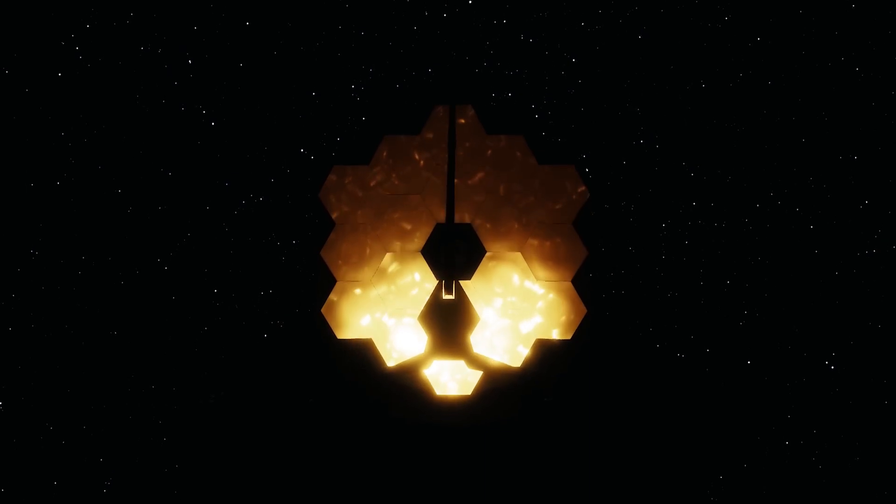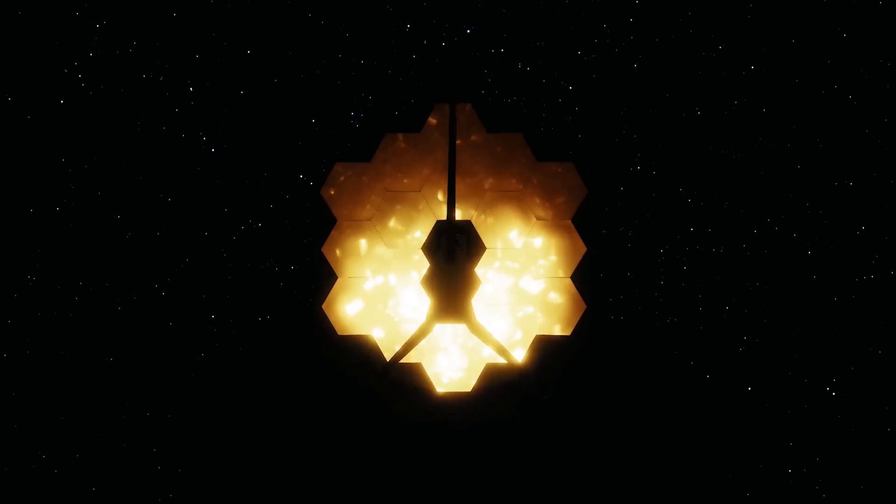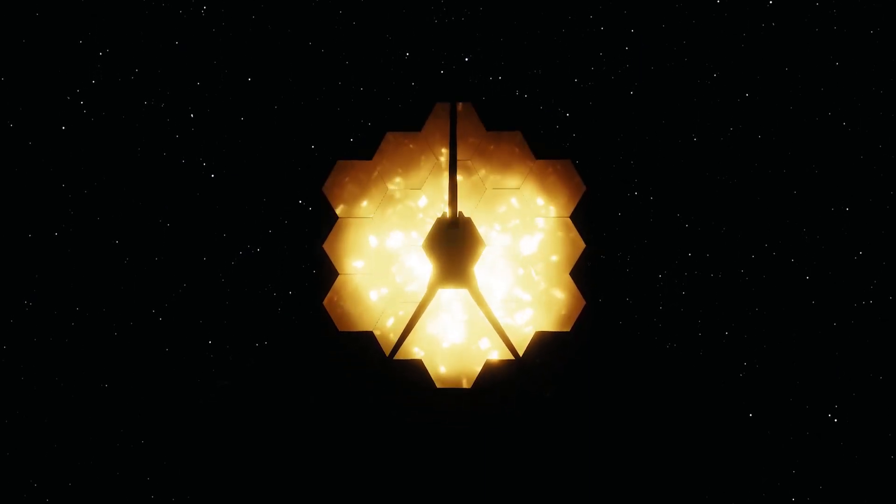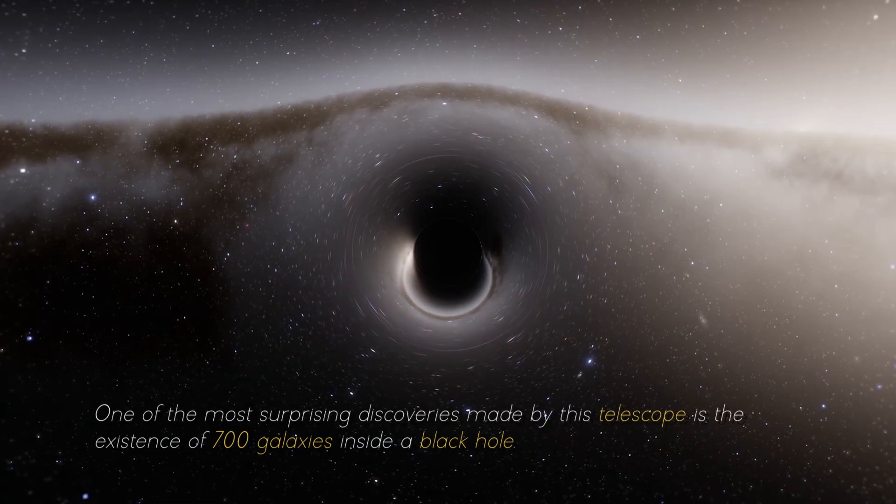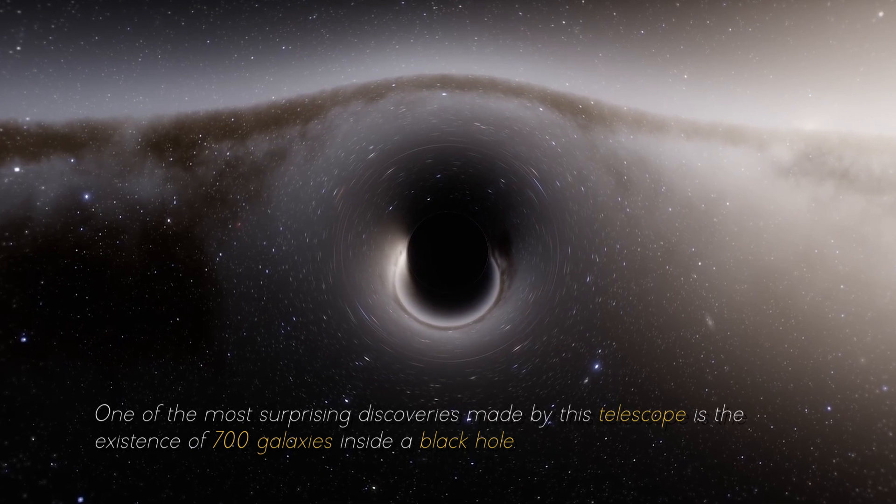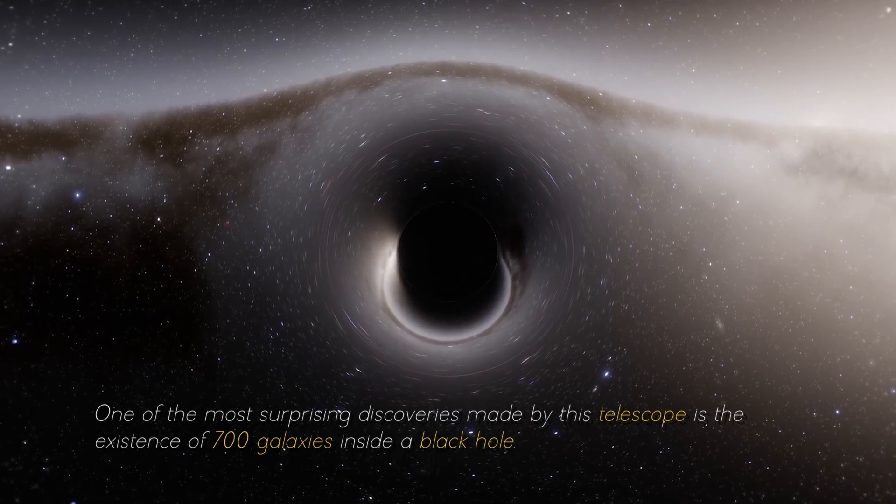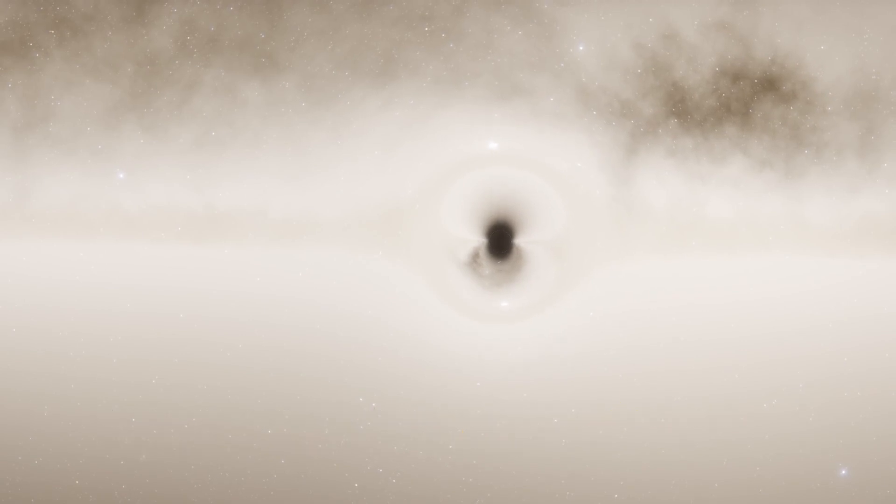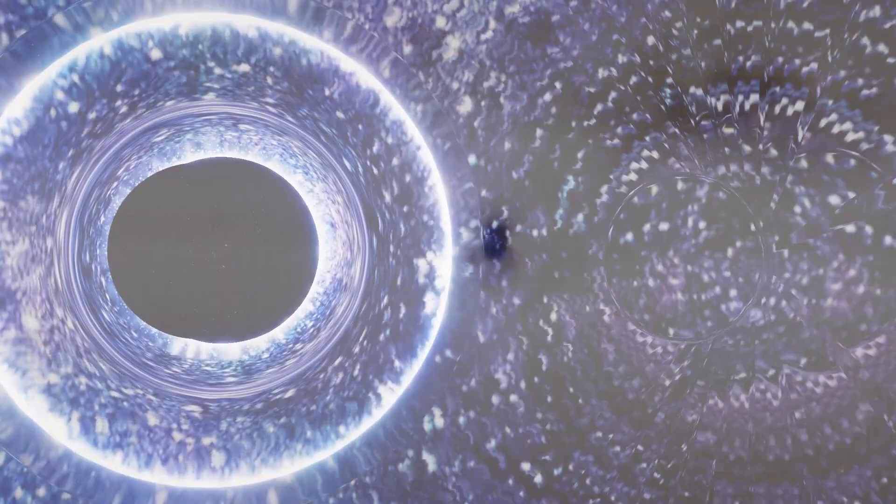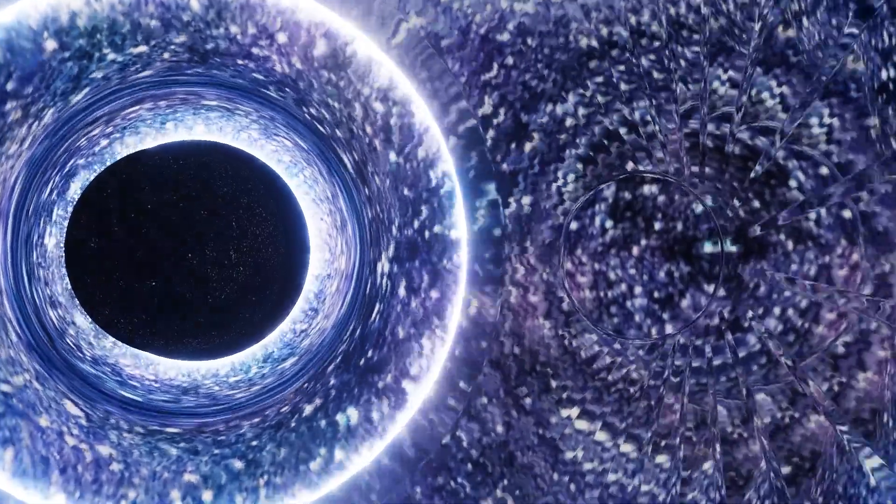However, the James Webb Space Telescope has the ability to observe beyond what any other technology has yet achieved. One of the most surprising discoveries made by this telescope is the existence of 700 galaxies inside a black hole. This finding challenges the conventional understanding of how black holes work.